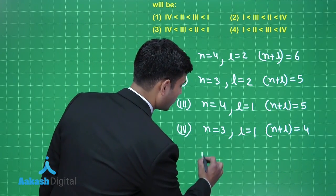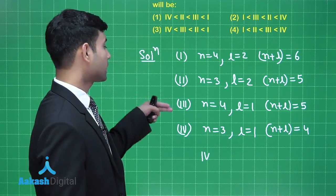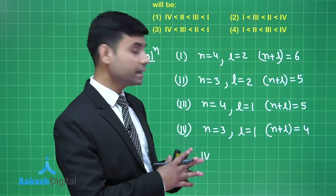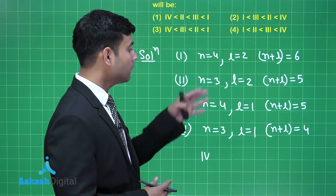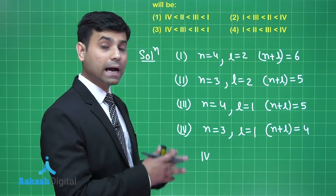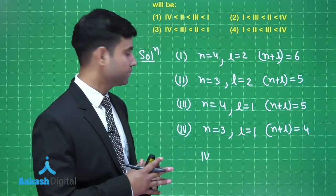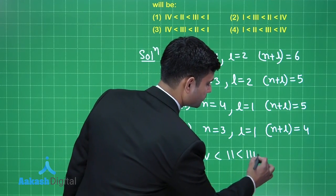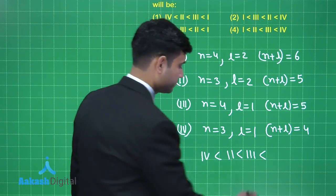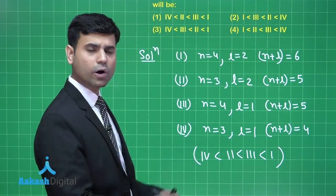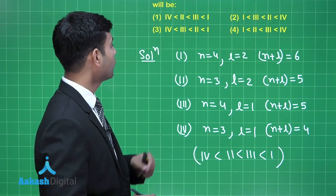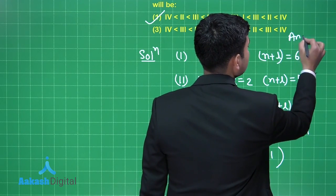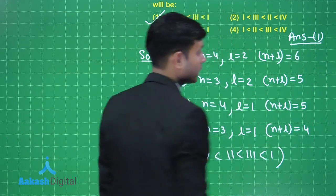The minimum energy is for the fourth orbital since its n+l = 4 is the lowest. The third and second orbitals both have n+l = 5, so for the same n+l we use the value of n — the higher the n, the higher the energy. So the third orbital has higher energy than the second. The highest energy belongs to the first orbital with n+l = 6. The increasing order of energies is: 4, 2, 3, 1. Looking at the options, the correct answer is option 1.